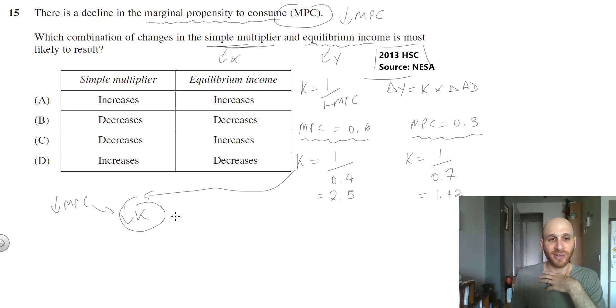With the simple multiplier we know that it decreases, so we can say A is not possible and D is not possible either. So I've got between B and C. Now let's look at our second formula.